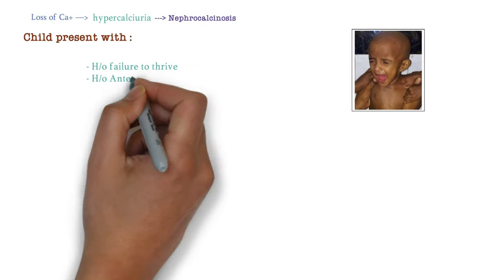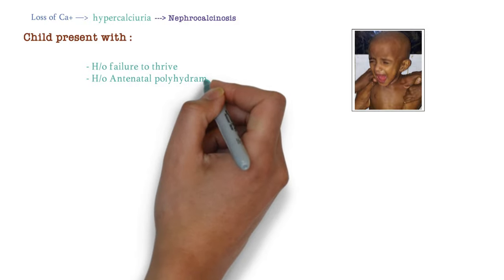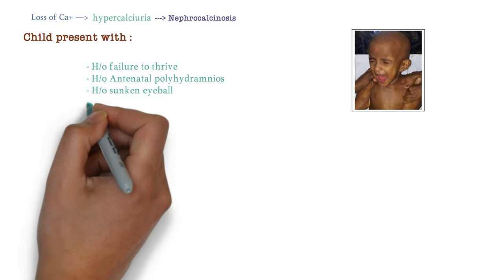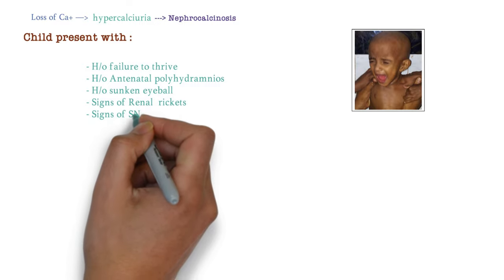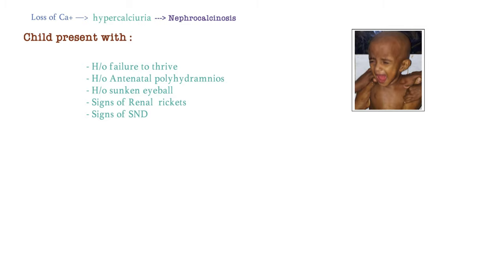History of antenatal polyhydramnios, signs of dehydration and signs of renal rickets. Also, the child can present with sensorineural deafness as these channels are present in inner ear as well.